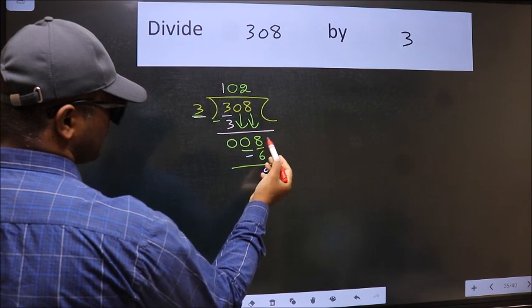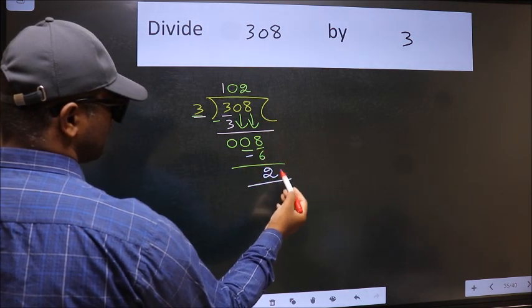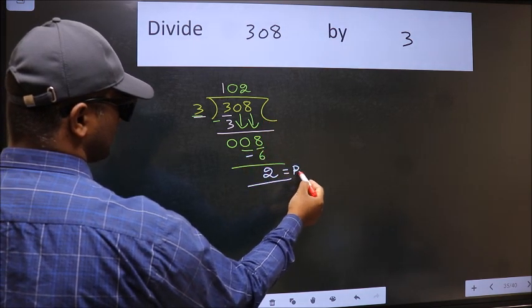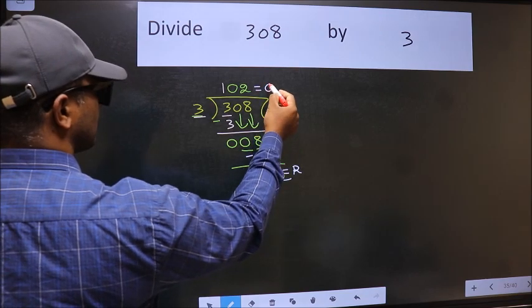No more numbers to bring down. So, this is where we stop. This is our remainder and this is our quotient.